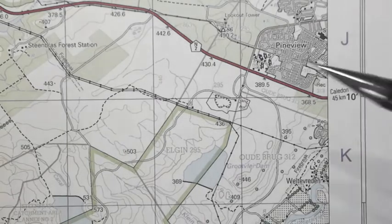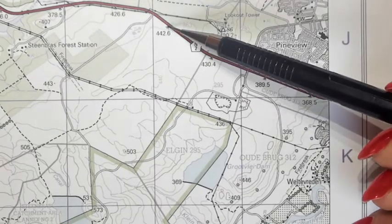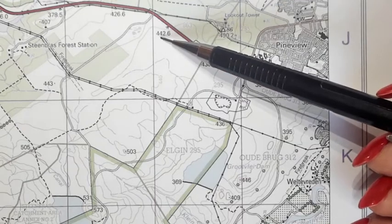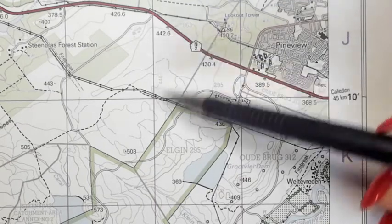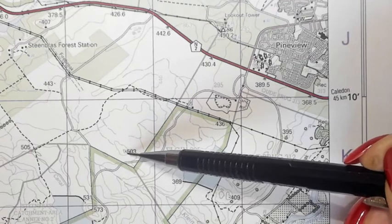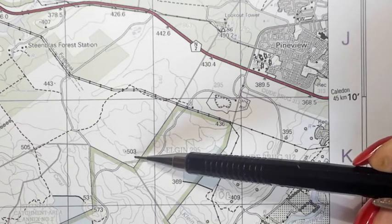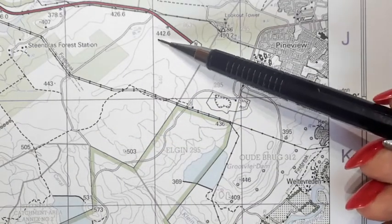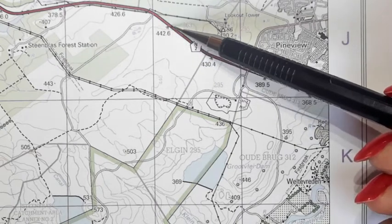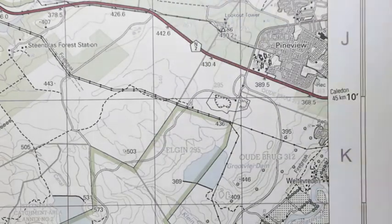The first piece is what is the height of the two points and you can see clearly here. The one is 442.6 and the other one is 503. So 503 meters and 442.6 meters. They've both got a known height.